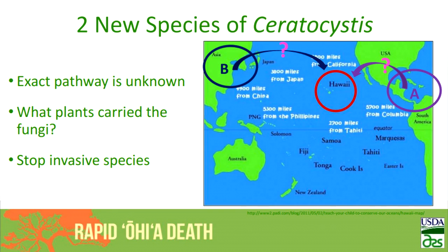To give you a geographical picture, the exact pathway of how it got here is unknown. One of the species, when grouped by related species elsewhere in the world on different hosts, trees, and crops, is very similar to species coming from Latin America or the Caribbean. Another is actually from Asia. We're still trying to figure out what plants carried this in, in order to stop any future introductions of these invasive species.